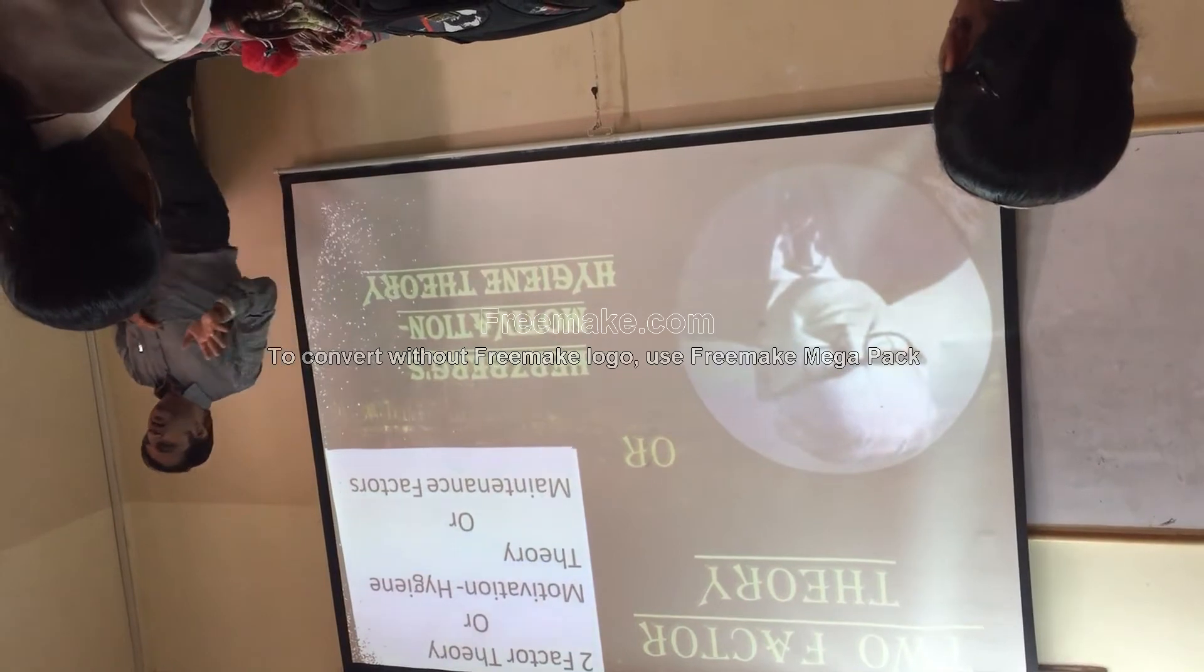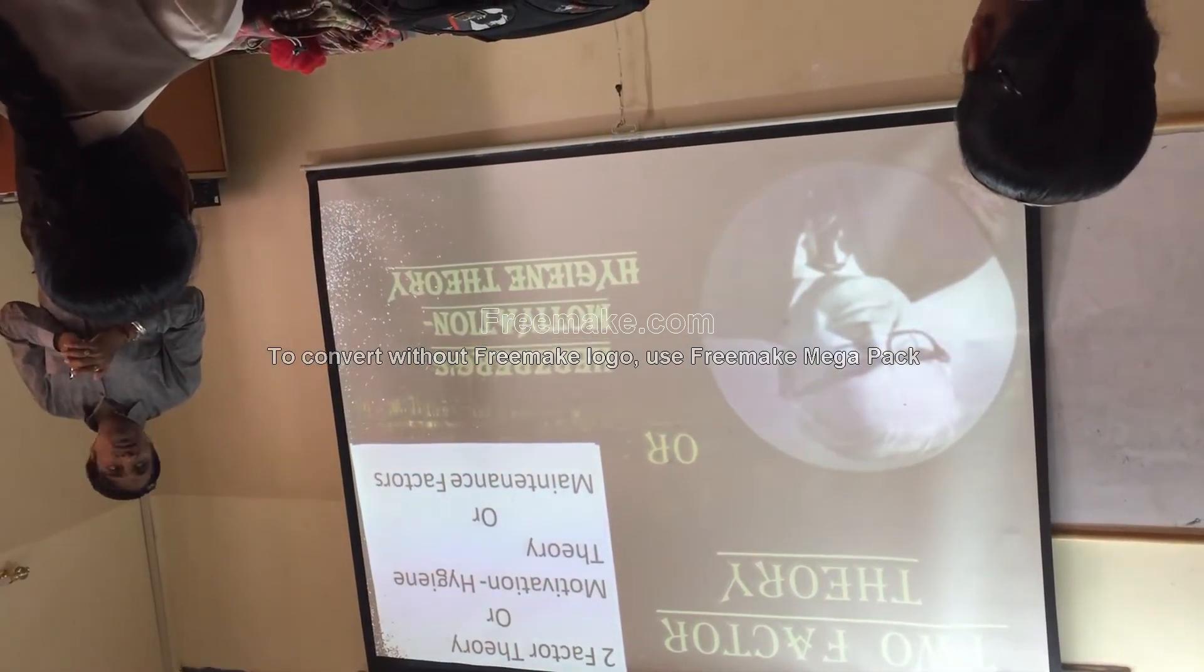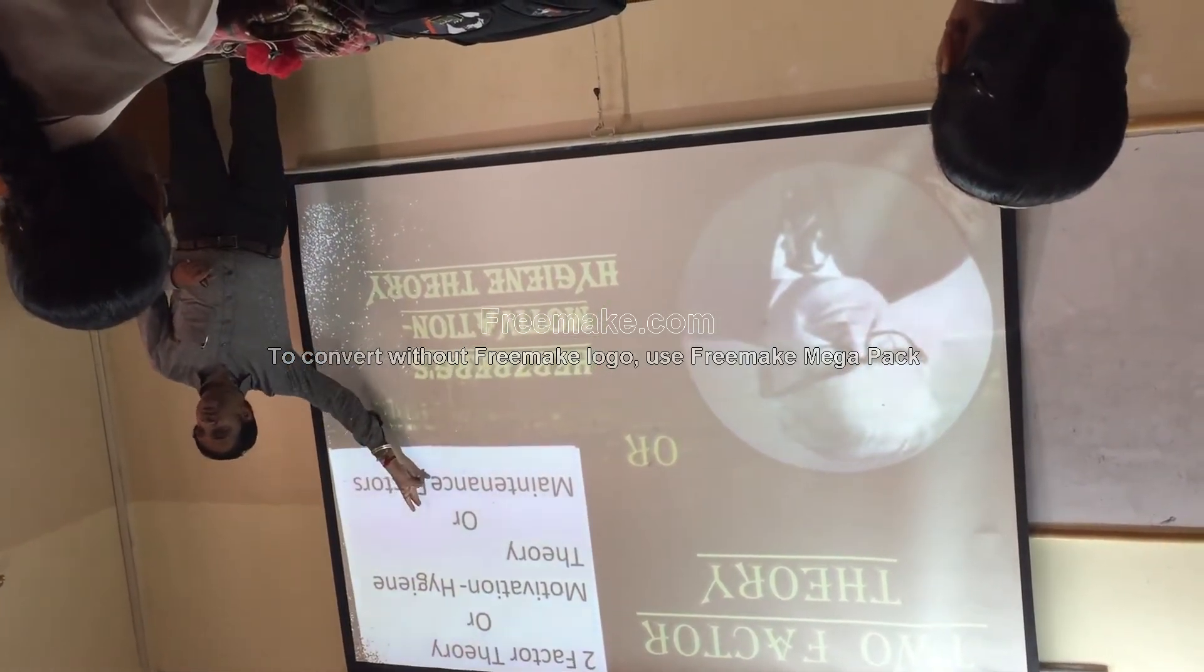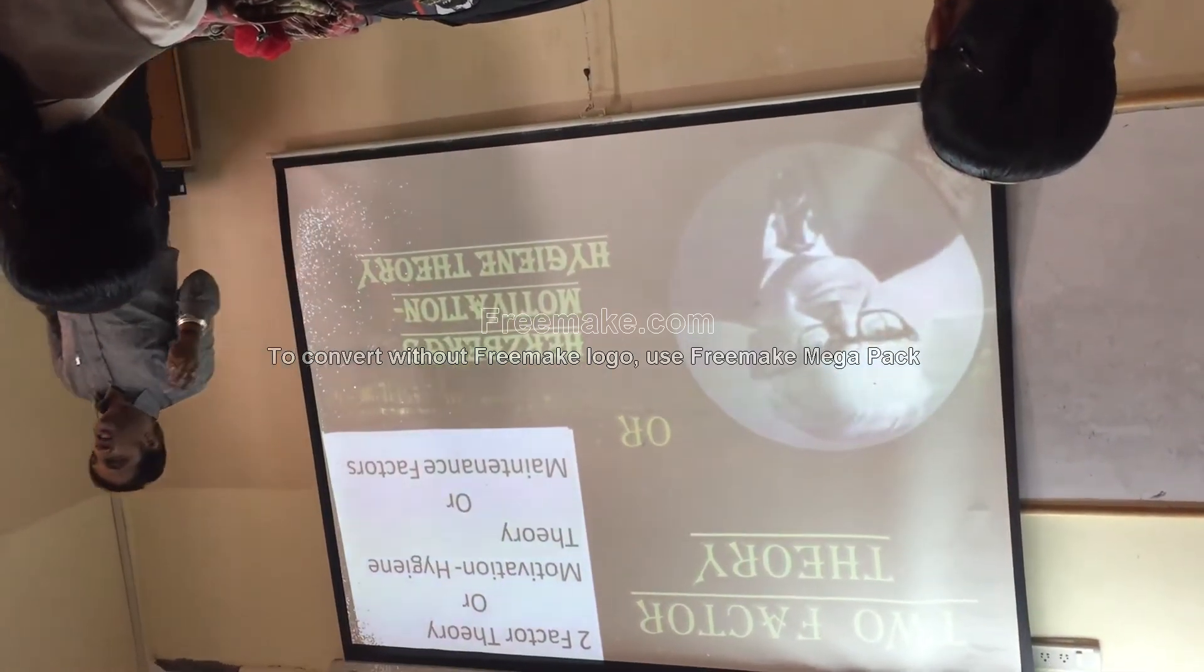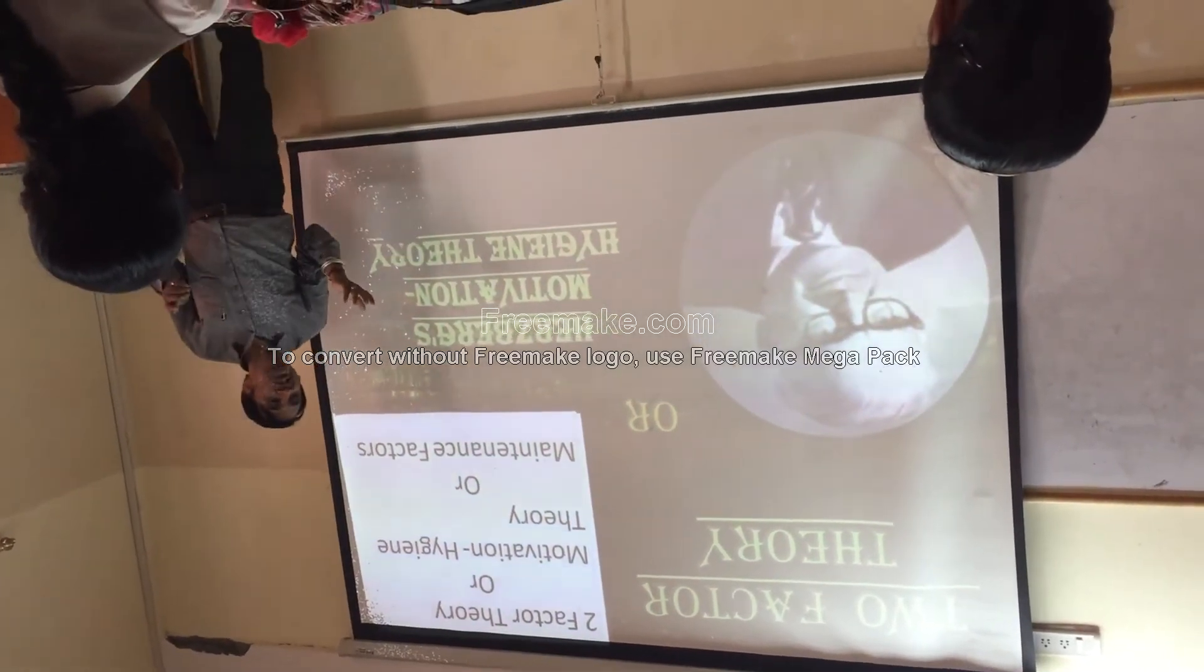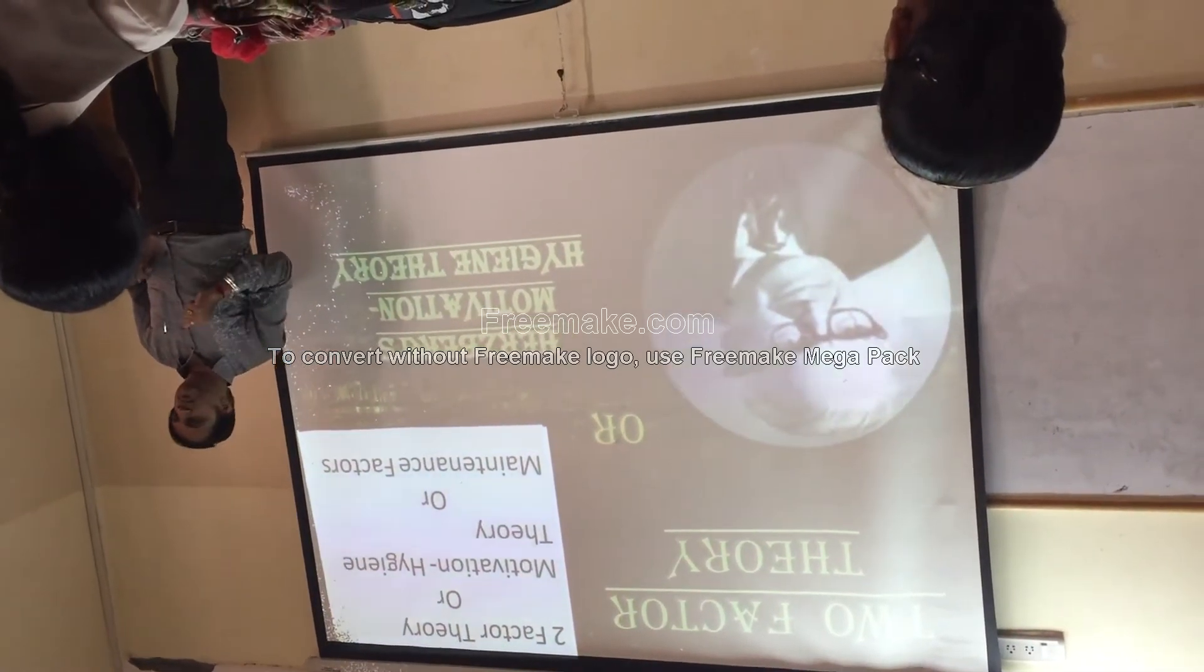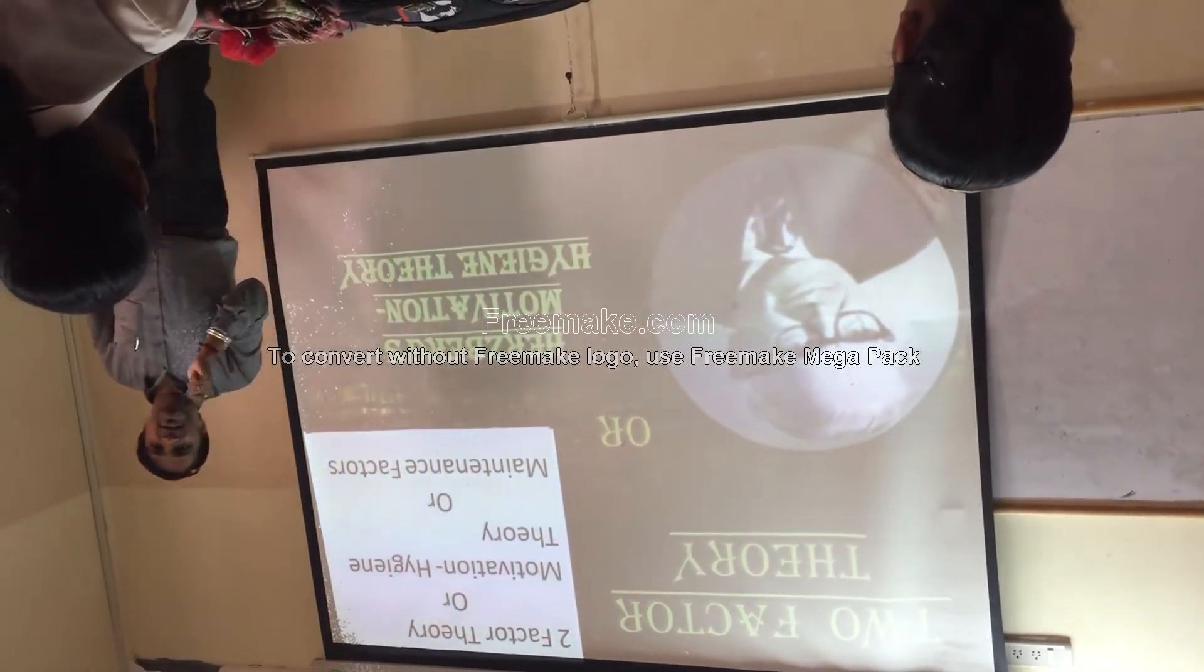We expect something from the company. And this is where Herzberg two-factor theory came into force. This particular theory can be taught in a very different angle. We call them as motivation hygiene theory or maintenance factor theory. If somebody asks a question, there are three types of questions they can ask: explain Herzberg two-factor theory, explain maintenance factor theory, or explain motivation or hygiene theory. There are three questions which can be asked but the answer remains the one. Let's try to unlock what are those two factors which are very much necessary.